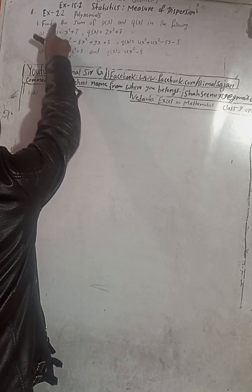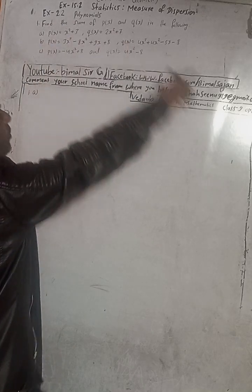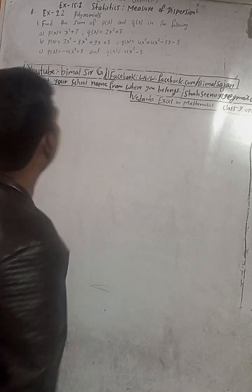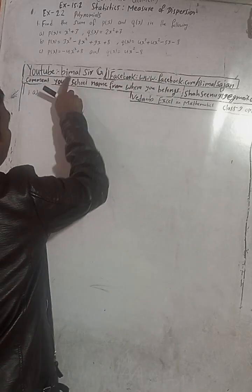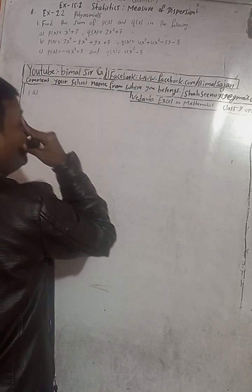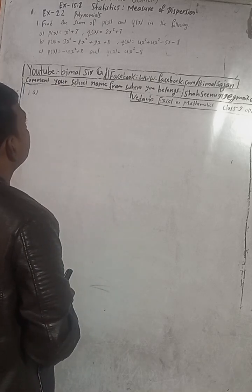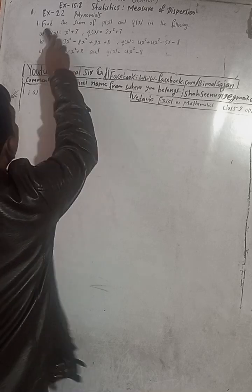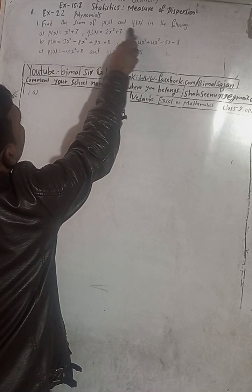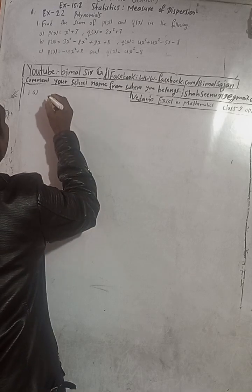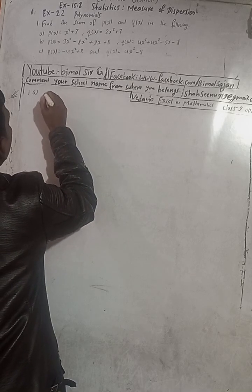This is question number one, exercise 2.2, polynomials, Vedanta Excel in Optional Mathematics class 9. Don't forget to check the playlist where you'll get class 9 and 10 solutions. Now question one is here: find the sum of px and qx in the following.